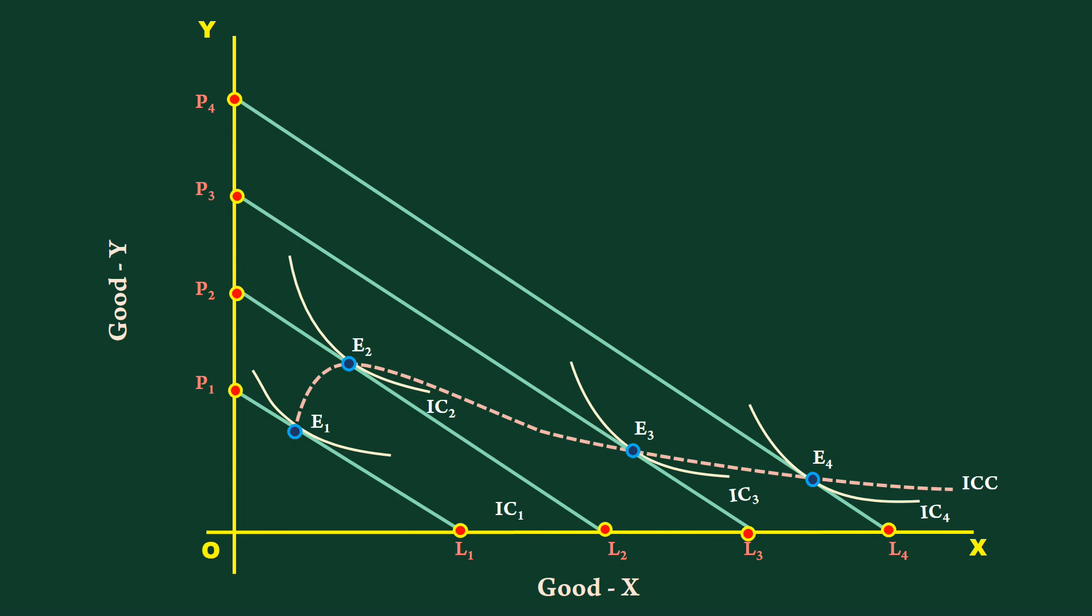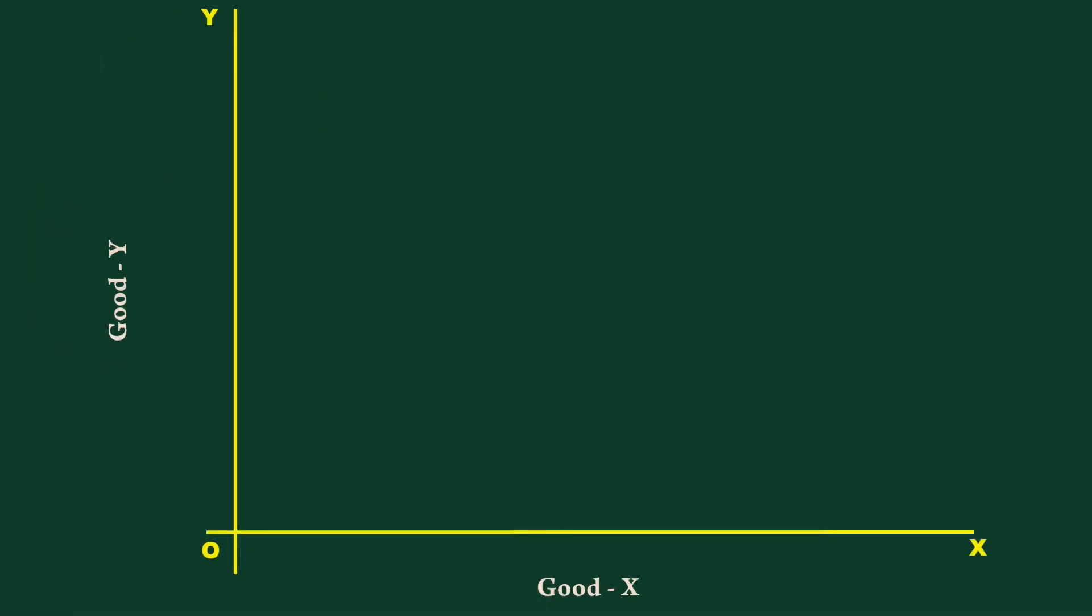In the next video, we shall see how an upward sloping income consumption curve shall be used to identify goods as necessary or luxury.